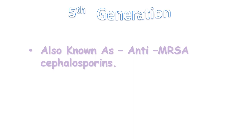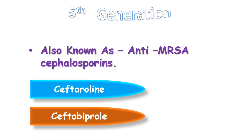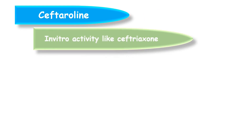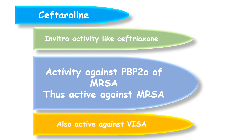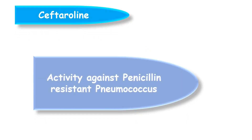Now let's talk about the fifth generation cephalosporins. These are also known as anti-MRSA cephalosporins, and include Ceftaroline and Ceftobiprol. Ceftaroline is a fifth generation cephalosporin whose active metabolite has a spectrum of in-vitro activity similar to Ceftriaxone but with improved gram-positive activity. In particular, Ceftaroline has higher affinity for PBP2A — penicillin-binding protein 2A — present in methicillin-resistant Staphylococcus, giving it activity against MRSA. It is also active against vancomycin-intermediate Staphylococcus aureus, and against Streptococcus pneumoniae that is intermediate or resistant to penicillin or Ceftriaxone.